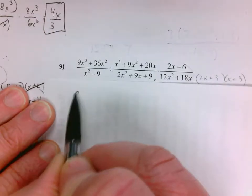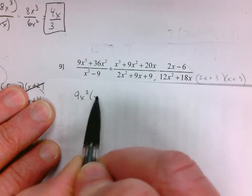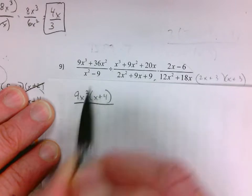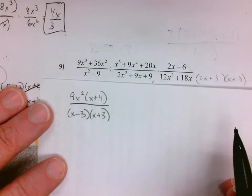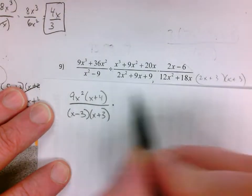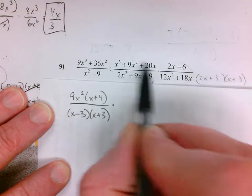Take out 9x squared, leaves me with x plus 4, x minus 3, x plus 3. Since we already wrote it out once, I'm going to factor and write at the same time.